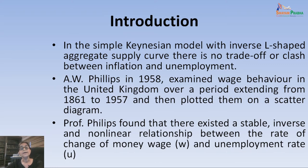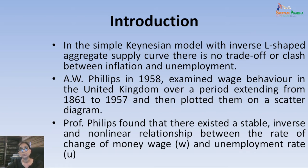It showed that when nominal wages increased, unemployment decreased, or when unemployment increased, wages decreased. So the trade-off which was not shown anywhere in the Keynesian aggregate supply curve was somehow found to be present in empirical research. According to A.W. Phillips, there is a stable inverse relationship between the rate of change of money wages and the unemployment rate.